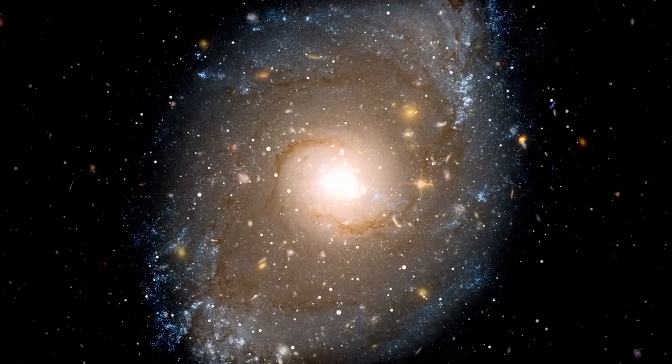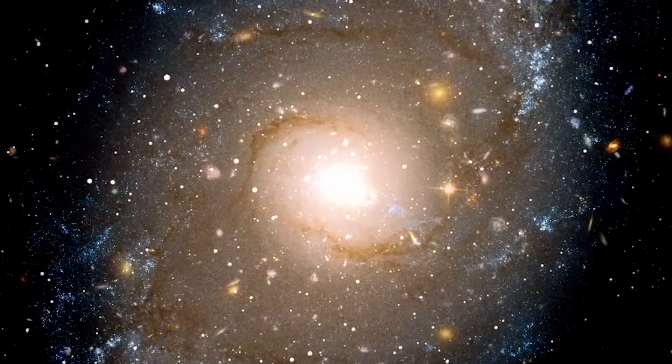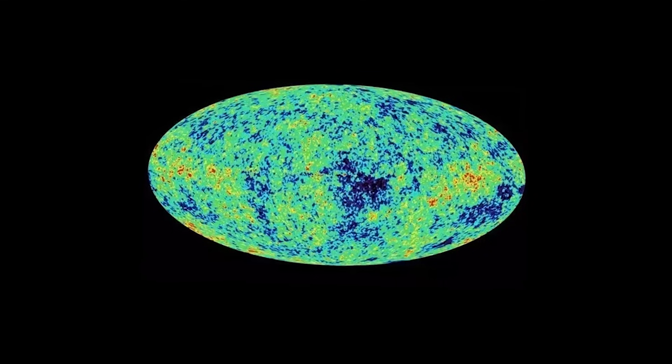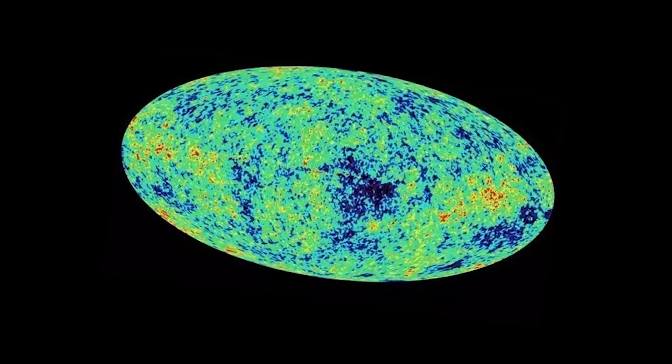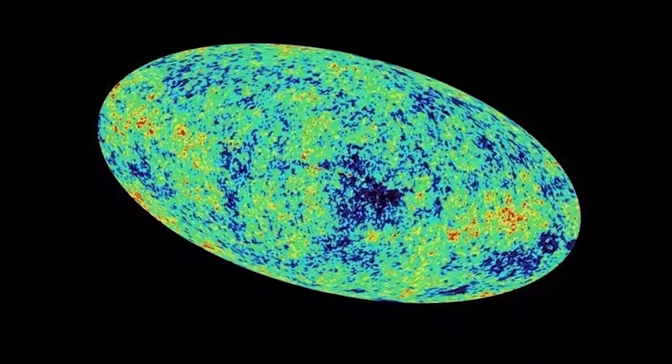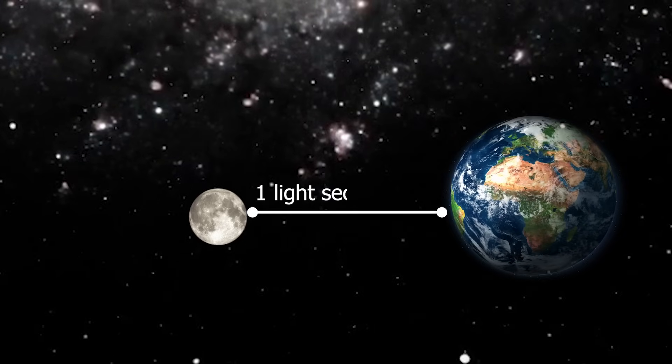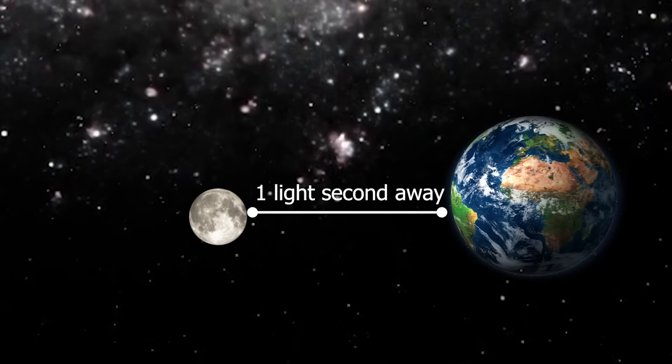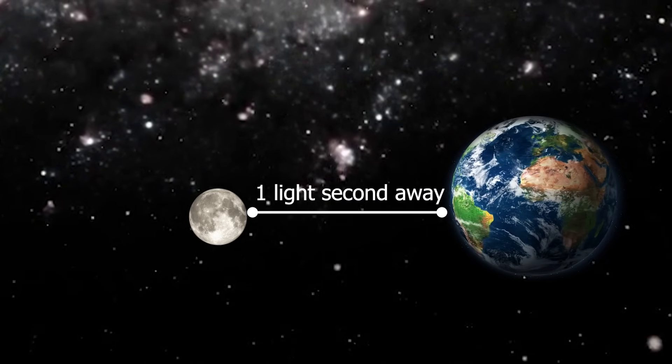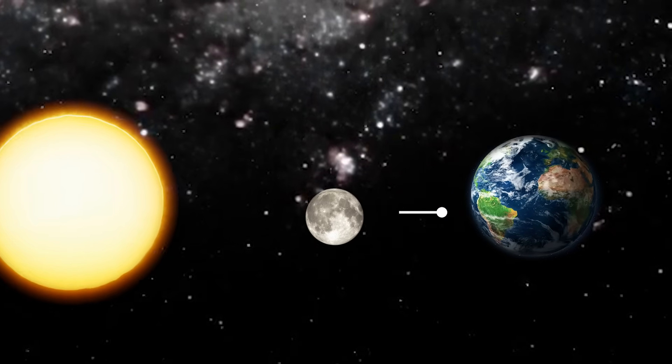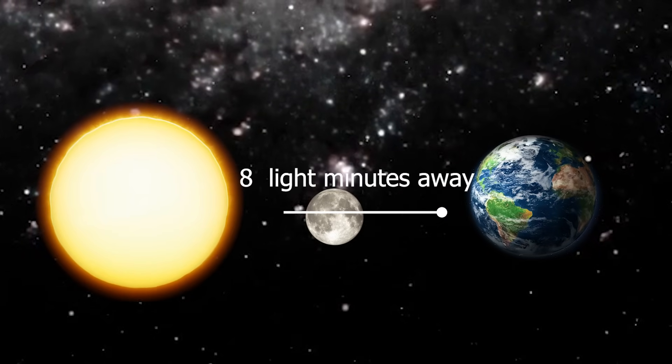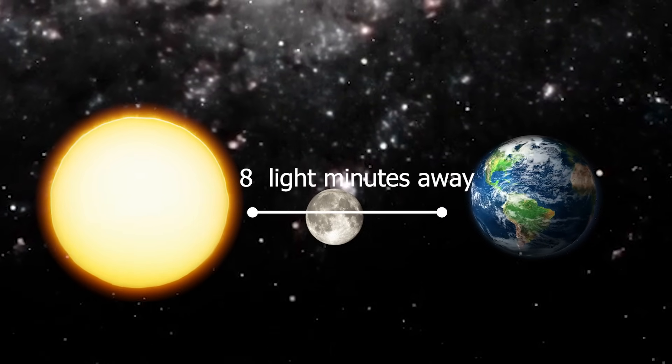Astronomers and physicists use this measurement to describe immense distances across our universe. The vastness of the universe means that light takes years to travel from one point to another. For example, light from the moon reaches our eyes in about one second, making the moon approximately one light second away. Sunlight takes about 8 minutes to reach us, putting the sun at a distance of 8 light minutes away.